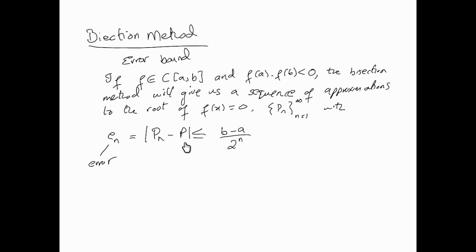So this is a symbolic representation, which means the error would be p_n, the approximation, minus the actual, so the absolute value of that is less than or equal to the interval (b - a) divided by 2 to the power n. So this is essentially the error bound. Let's see how we can utilize this idea.